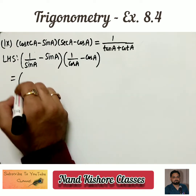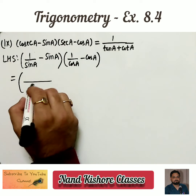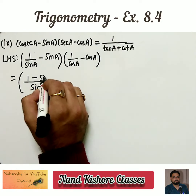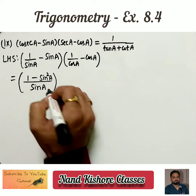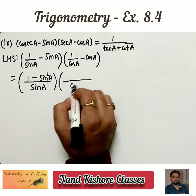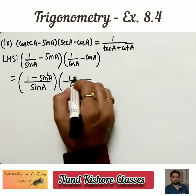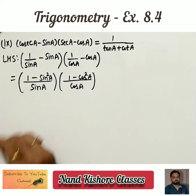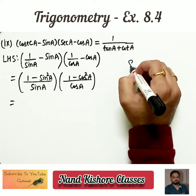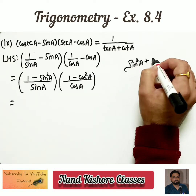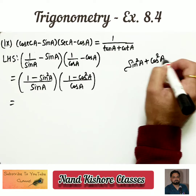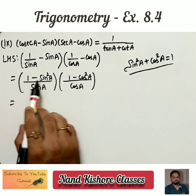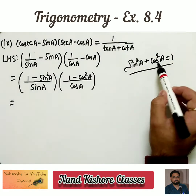Taking LCM of sin a in the first bracket: sin a multiplied with sin a gives sin square a, so the first bracket becomes (1 minus sin square a) upon sin a. Taking LCM of cos a in the second bracket gives (1 minus cos square a) upon cos a. Now using the formula sin square a plus cos square a equals 1.